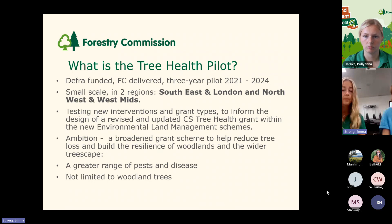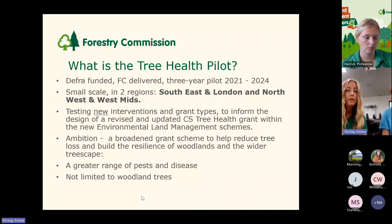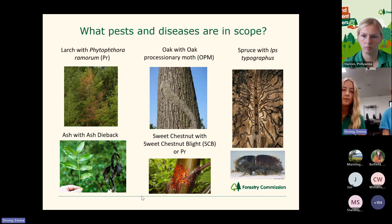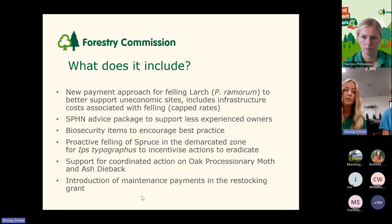The future Tree Health Scheme aims to reduce the impact of tree pests and diseases and build the resilience of our treescape, delivering against the aims of the Woodland Resilience Strategy, Biosecurity Strategy, and the Agricultural Transition Strategy. It will replace and improve upon current Countryside Stewardship tree health provision. The Tree Health Pilot is informing the design of this future scheme, funded by the Farming and Countryside Program in Defra and delivered by a small team within the Forestry Commission including two woodland officers and a plant health officer. It's a three-year pilot which launched in August 2021 and is due to finish in August 2024, currently operating in just two regions — the southeast and London, and the northwest and west midlands — though it will inform the future scheme which will roll out nationally. Pests and diseases in scope include larch with Phytophthora ramorum, oak with oak processionary moth, spruce with Ips typographus, ash with ash dieback, and sweet chestnut with sweet chestnut blight or Phytophthora ramorum. There is a new payment approach for felling of larch to better support economic sites and include infrastructure costs associated with felling.